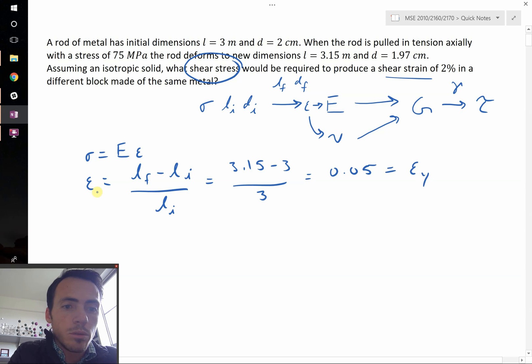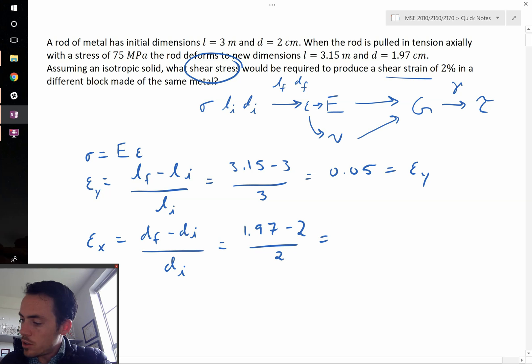And we could do in the X direction as well, the transverse direction. In the X direction, that's in the direction of the diameter, the radial direction. We could say that's the final diameter minus the initial diameter divided by the initial diameter. So this will be 1.97 minus 2 divided by 2, which gives us a transverse strain of negative 0.015.